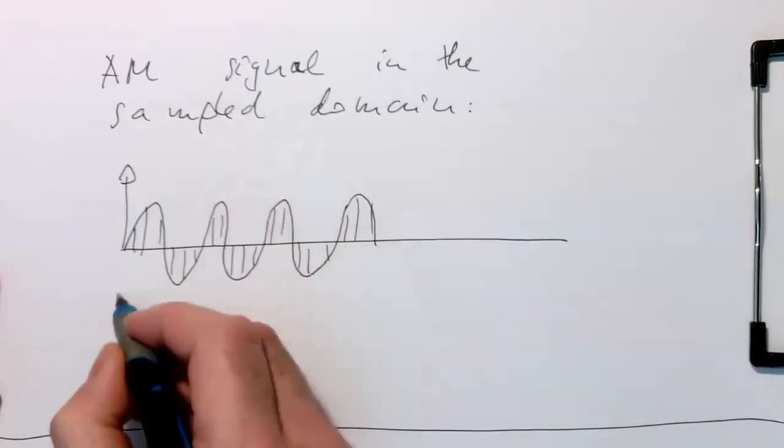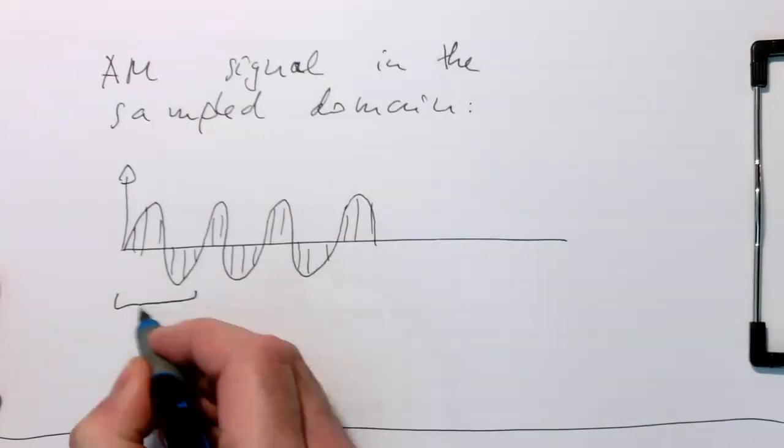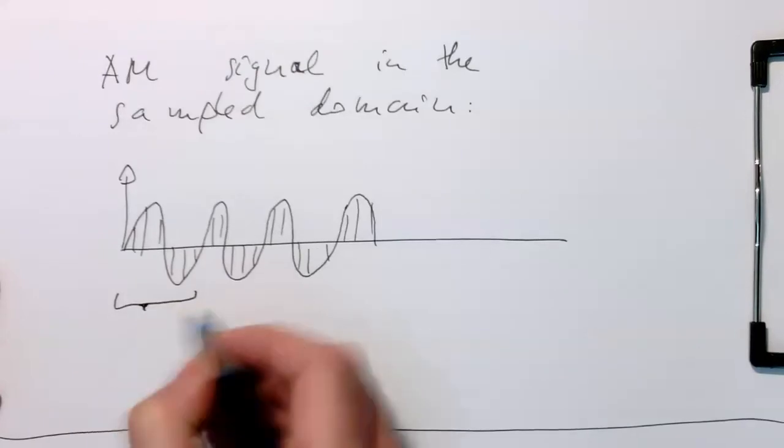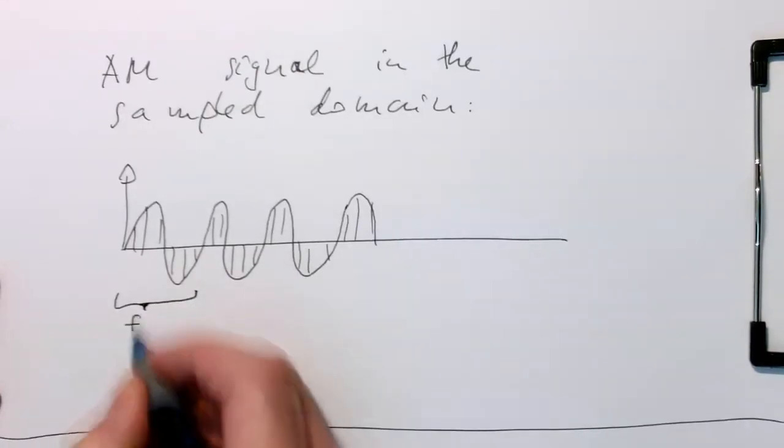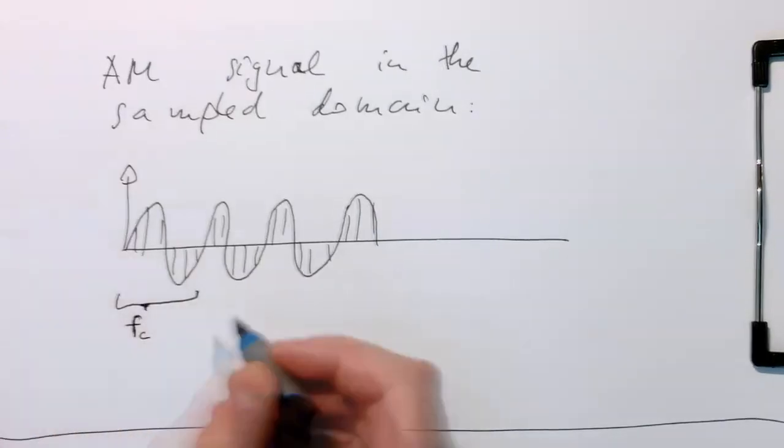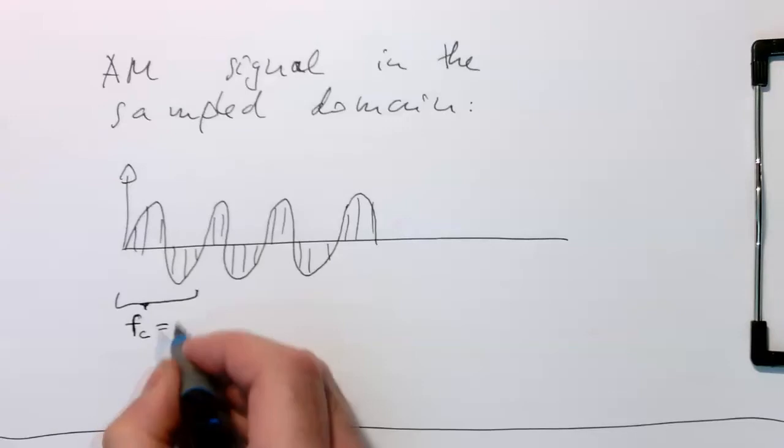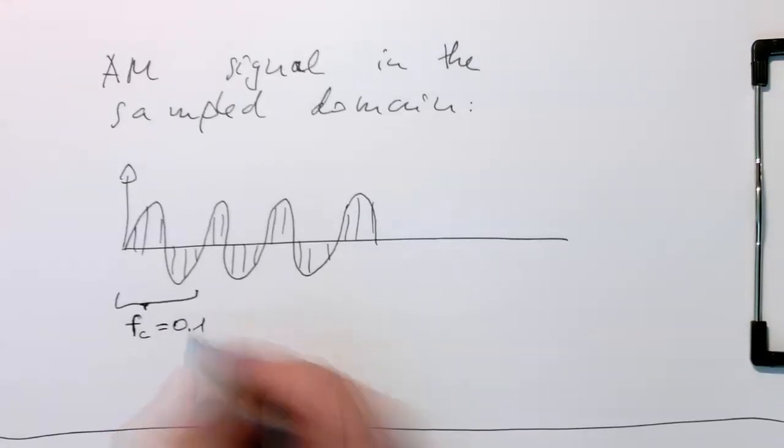Let's say this goes up to this point here. So this duration is defined by our carrier frequency f, or fc as we call it here. This is, in this case, as an example, 0.1.